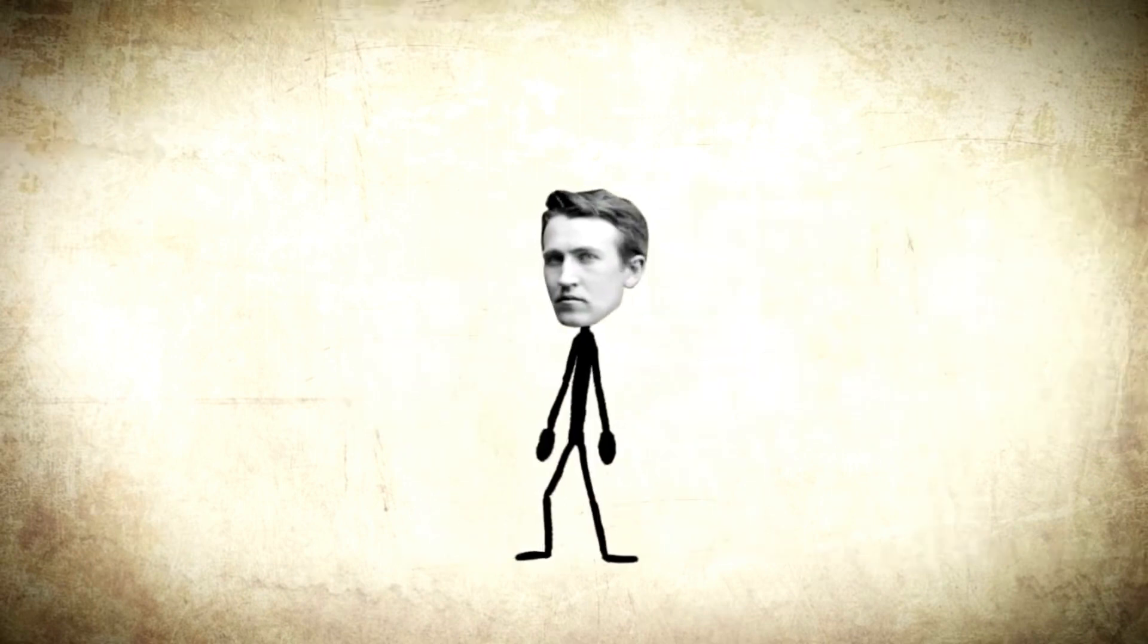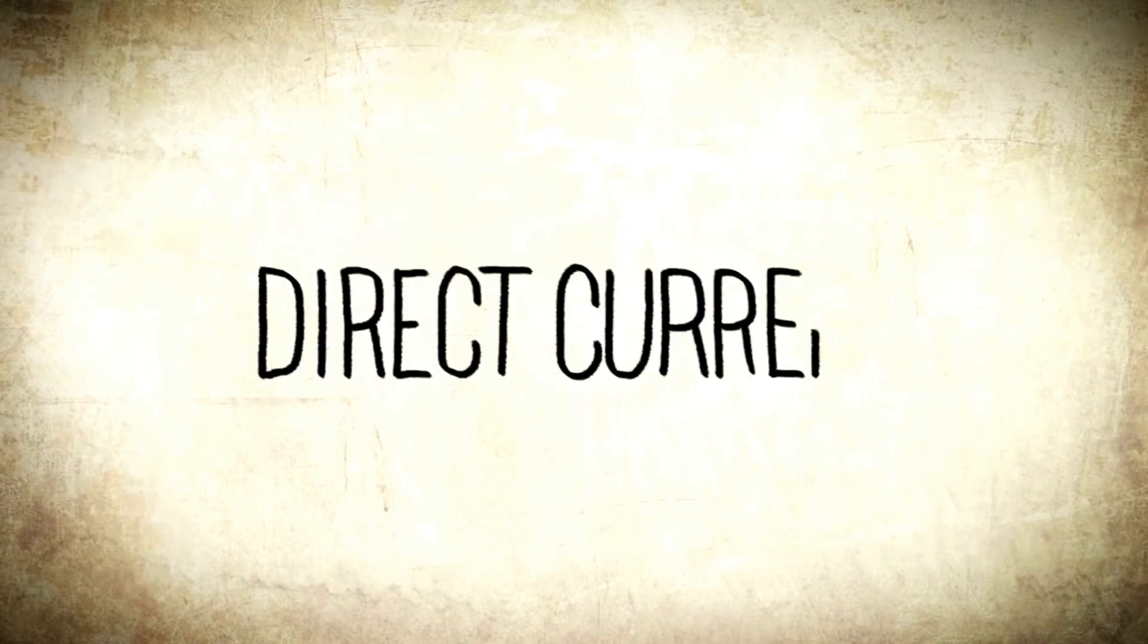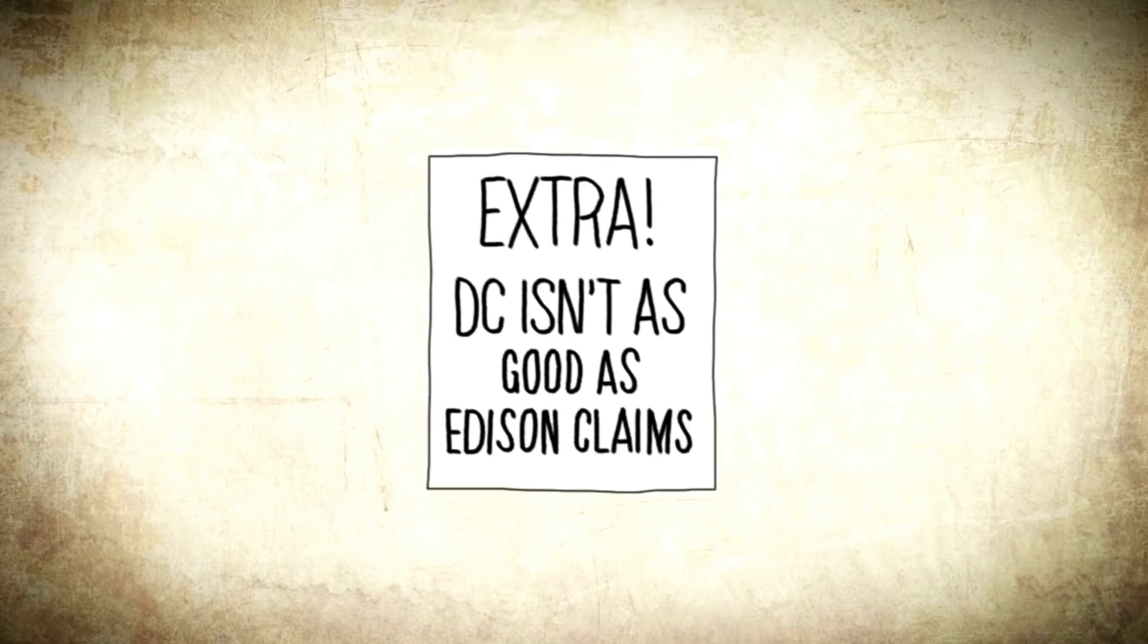Edison patented a system for electrical distribution in 1880 in order to capitalize on his electric lamps. Edison used direct current to power his system, which had its limitations. And when these limitations were made public, Edison launched a propaganda campaign to convince people of the superiority of direct current.